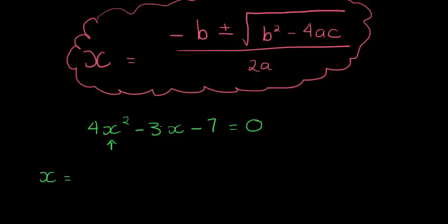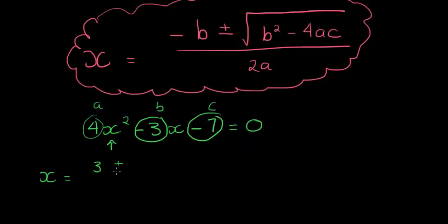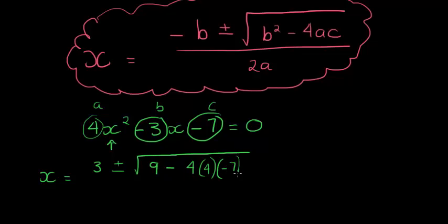So we're going to substitute. a is 4, b is negative 3, and c is negative 7. So: negative b is negative negative 3, which is positive 3. Plus or minus the square root of b squared: negative 3 squared is 9. Minus 4 times a, which is 4, times 4, times c, which is negative 7. In the denominator, 2 times a is 2 times 4, which gives 8.